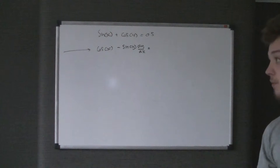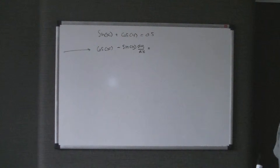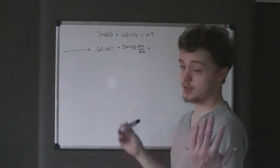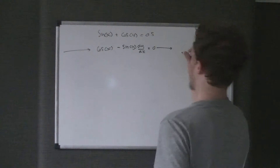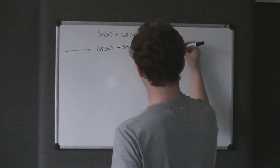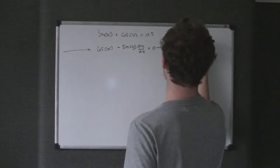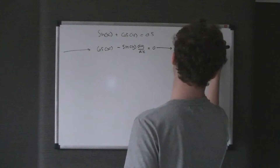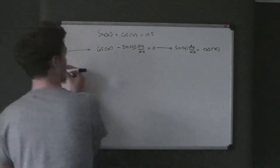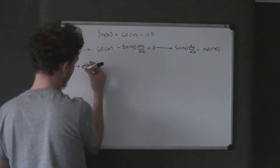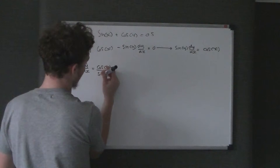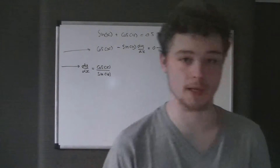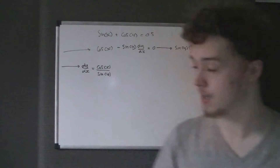We went over all of that in the implicit differentiation tutorial. When we differentiate 0.5, that becomes 0. So we can make the terms equal to each other. You could just go straight into it and put dy/dx equals, but I'm going to break it down into a couple of steps. Therefore, sine y times dy/dx equals cos x.